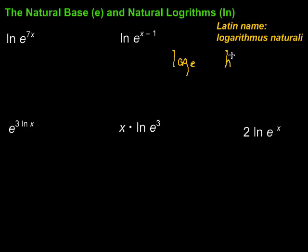So some specific properties: if we have the natural logarithm of e to the x power, that's just going to simplify to x, because these two things are inverses of each other. In the same way, if I have e to the natural log of x power, that's going to simplify to just x.